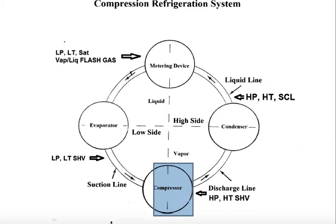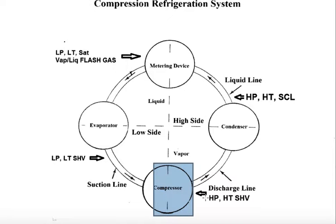This is a continuing circle. Refrigerant is never used up — it can leak out if the system has leaks, but it is never used up and never has to be changed. And that's the refrigeration cycle.